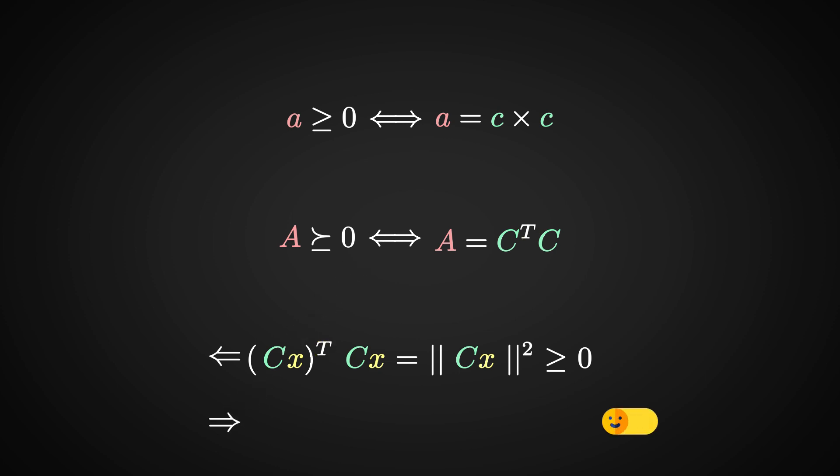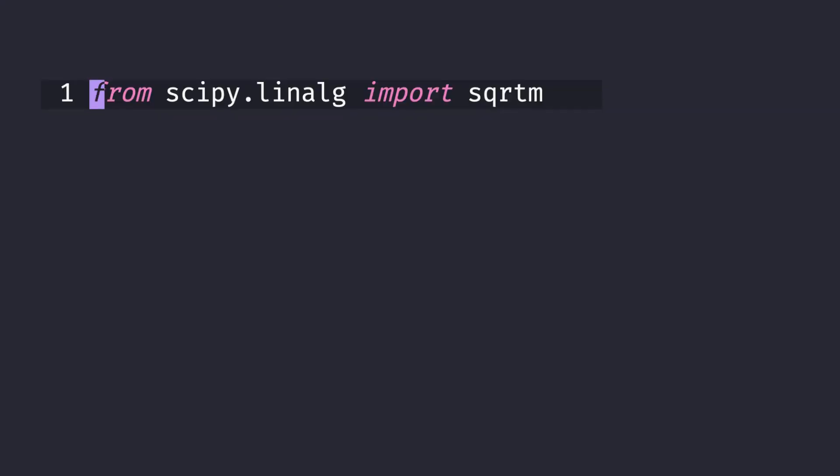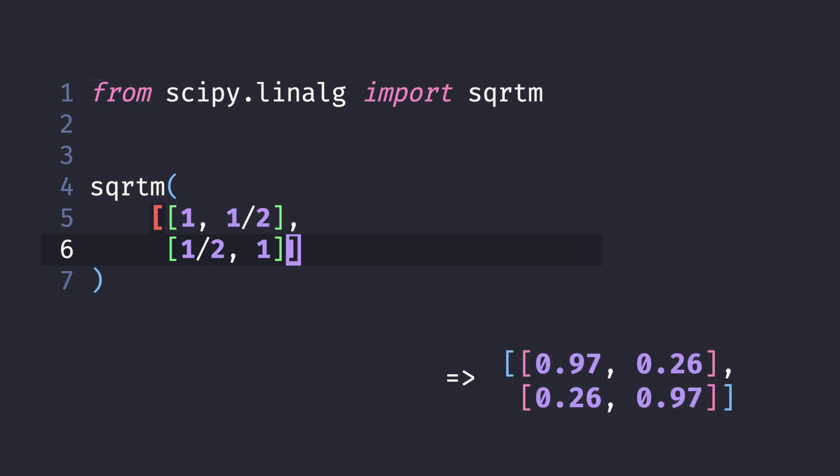For the other implication, I have good and bad news. The bad news is that this implication is a bit more complicated to prove, so we will not see a proof here. The good news is that the proof is entirely constructive and there are algorithms that take as input a positive semi-definite matrix and compute its square root. In Python, for example, you can call the function sqrtm from the package scipy, where the m stands for matrix, to get a square root decomposition of a positive semi-definite matrix.